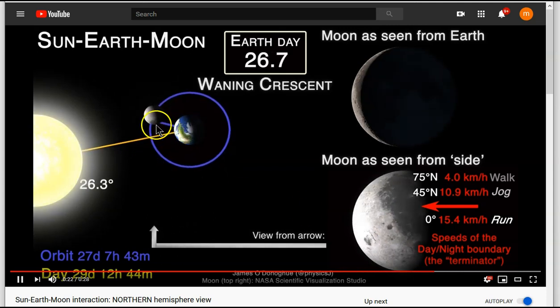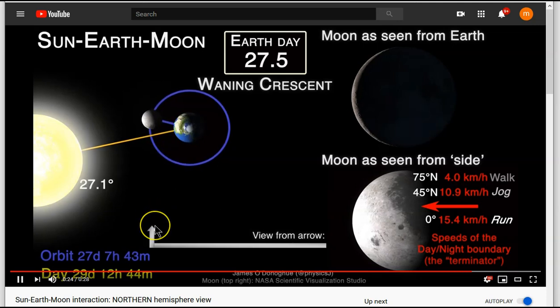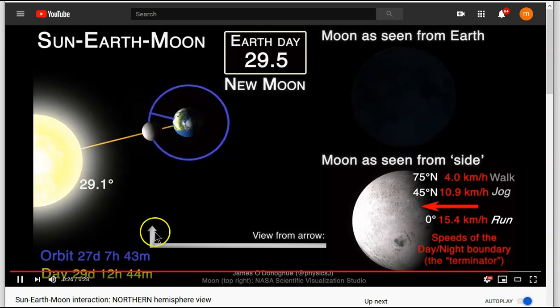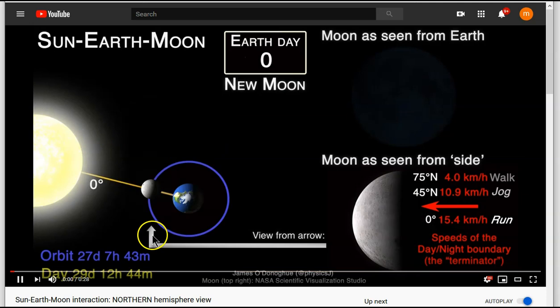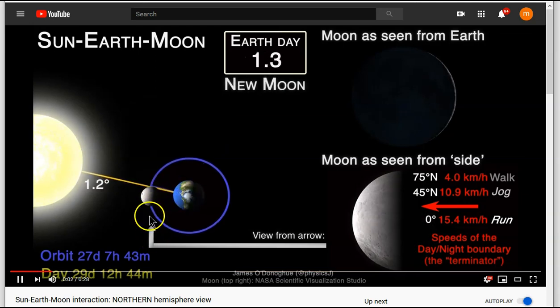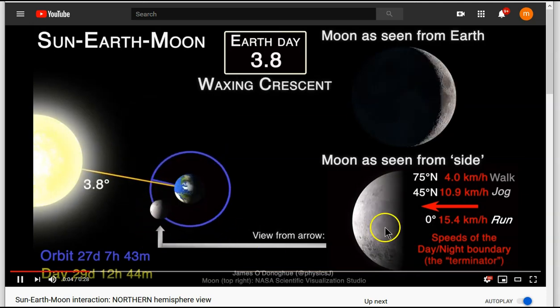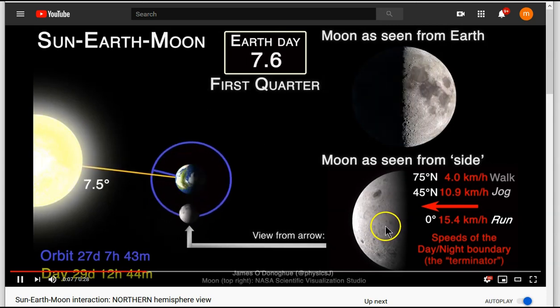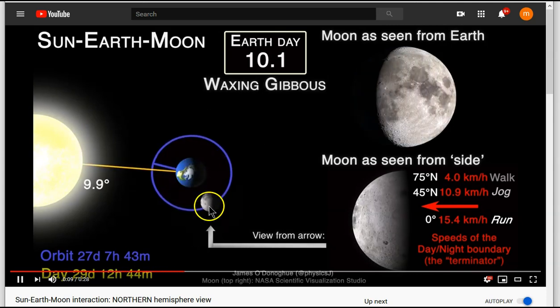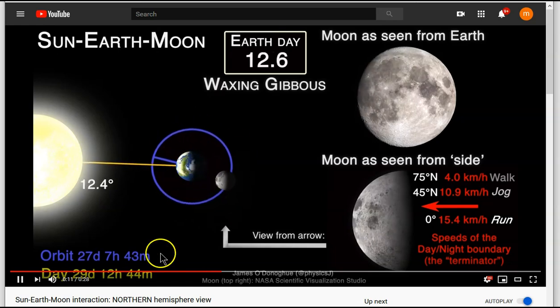If we were to follow the moon and always be watching the moon from the side, as we see, we'll repeat the animation again. So, again, if we always look at the moon from the side here, we would see the moon rotating. And, again, it rotates once per orbital period.